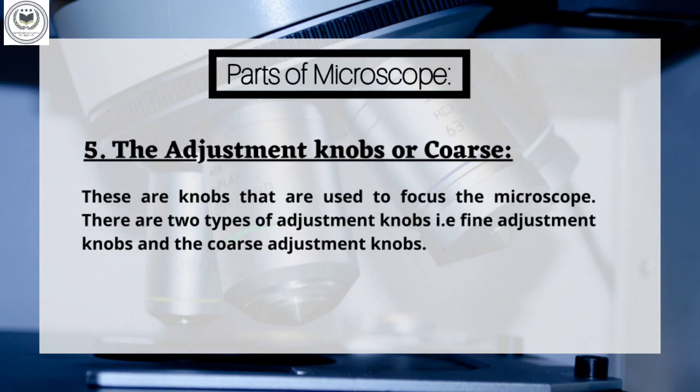Part 5: Adjustment knobs, or coarse knobs. These knobs are used to focus the microscope. There are two types of adjustment knobs: fine adjustment knobs and coarse adjustment knobs.